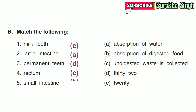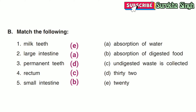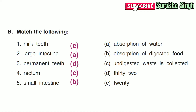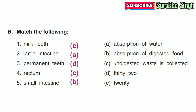3. Permanent teeth — Permanent teeth are 32 in number. 4. Rectum — The undigested waste is collected in the rectum. 5. Small intestine — The walls of the small intestine absorb the digested food.